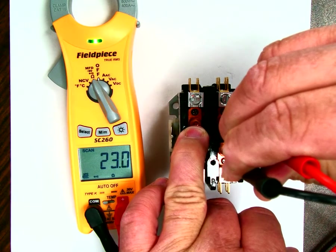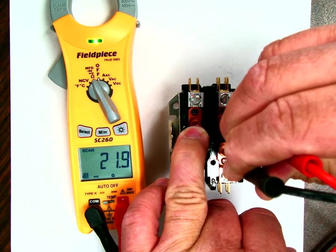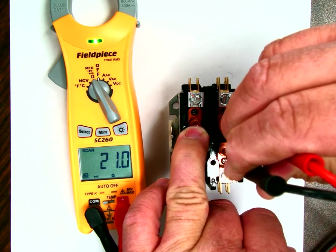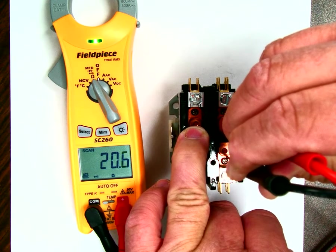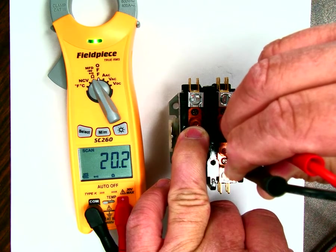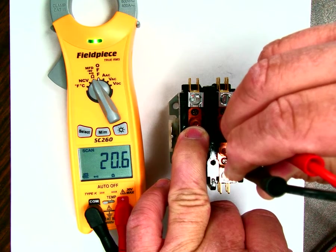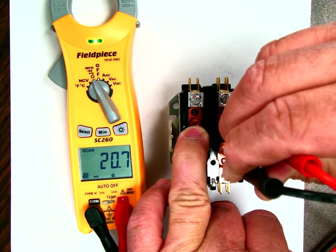You'll notice there's some resistance, and that means there's something wrong with this contactor. Because normally it should be close to zero, but it's showing 20. So that's really not a good sign. But I wanted you to see even what a bad contactor looks like.